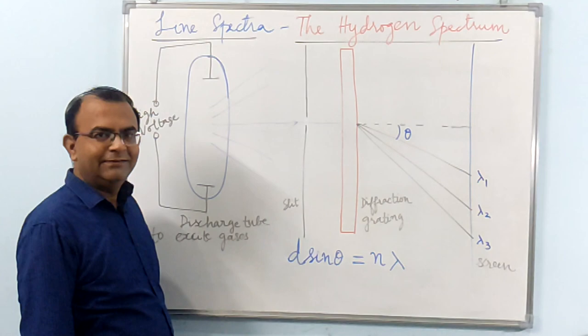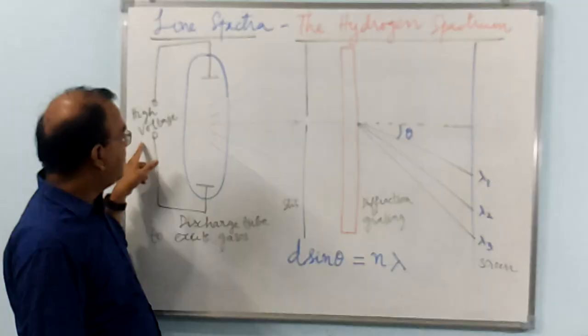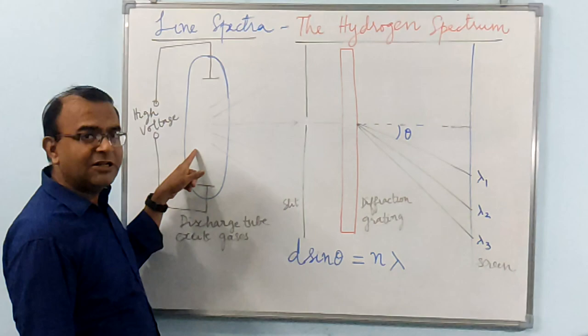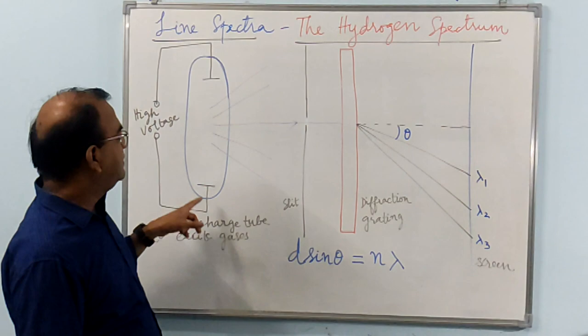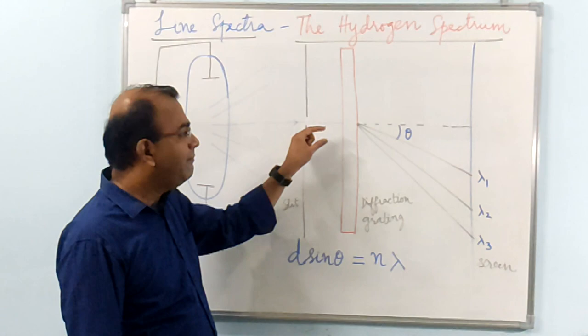This is the typical setup used to study the line spectrum of elements. In this one, you have a high voltage battery exciting a discharge tube containing low pressure gases. This is used to excite the atoms in the gas.